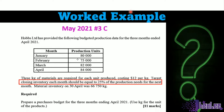For example, looking at February: to get the closing inventory for February, it would be 25% of the March production needs of 82,000. Bear in mind that this 25% of 82,000 would form the opening inventory for March. If we need the closing inventory for March, it would be 25% of the 84,000 coming from April.